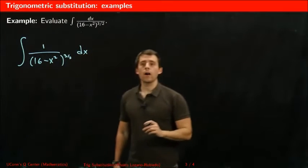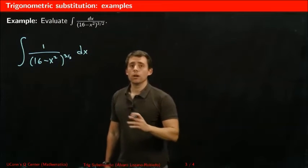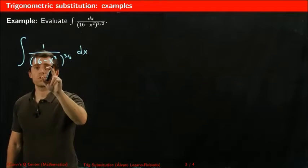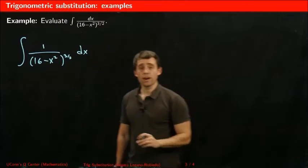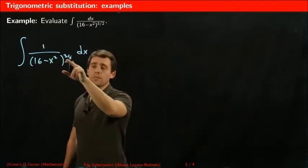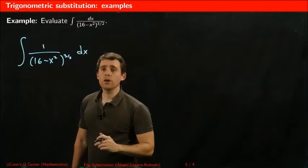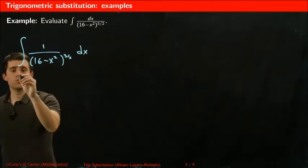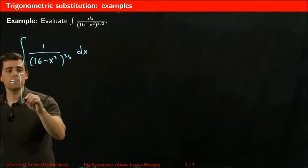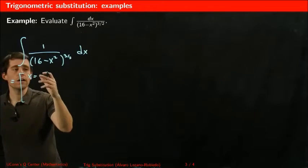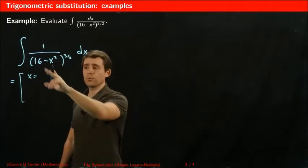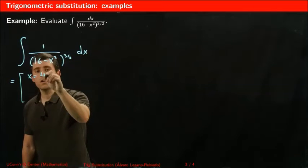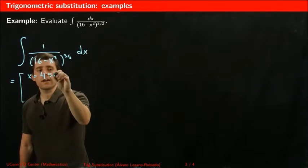Now I'm going to do my trigonometric substitution. Since I see a constant minus the square of the variable inside something that is some fractional power, I'm going to choose my substitution to be x equals a sine theta where a is the square root of this number that appears here. So it's going to be 4 sine theta.